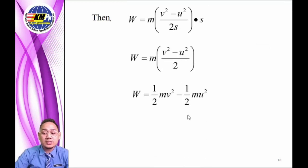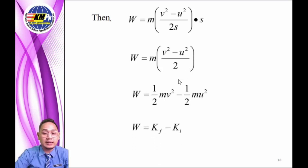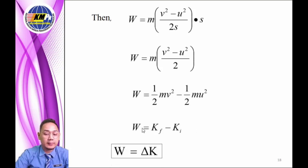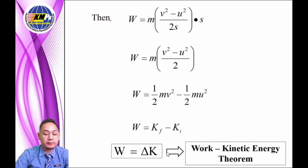The derivation is shown here. As you can see, the final derivation gives: work done equals final kinetic energy minus initial kinetic energy, which we can denote as delta K. Thus, the formula is W = ΔK. This relationship is what we call the Work-Kinetic Energy Theorem.